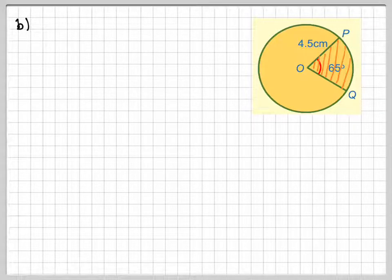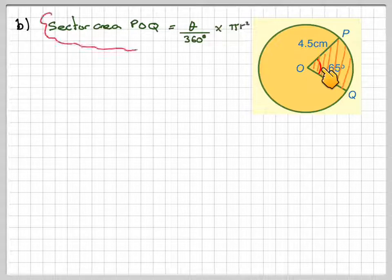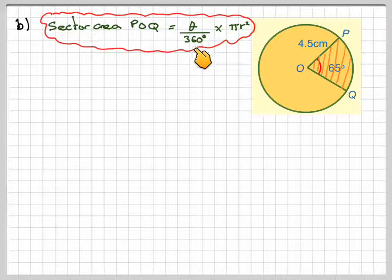What is the area of a circle? It's πr², so it's going to be a fraction of πr². The fraction is the angle in the middle, which we'd call theta, divided by 360, times the area of a circle, which is πr².